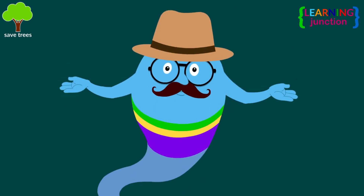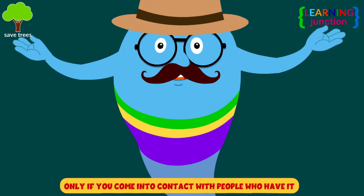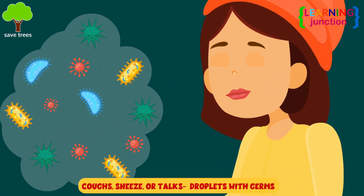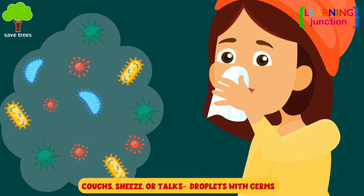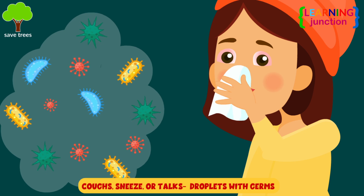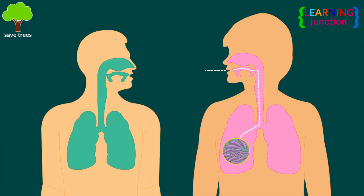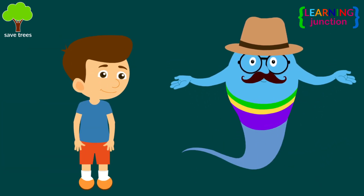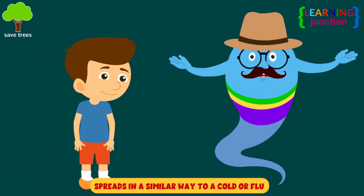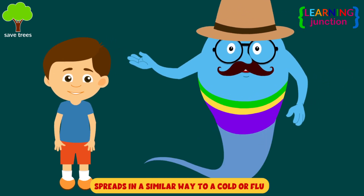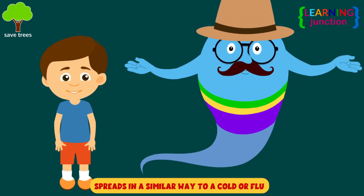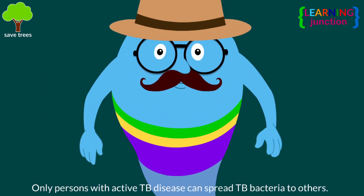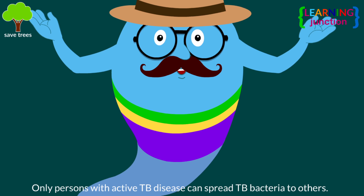You can get TB only if you come into contact with people who have it. When someone who has TB coughs, sneezes, or talks, they release tiny droplets that contain the germs. If you breathe in these germs, you can get it. Tuberculosis spreads in a similar way to a cold or flu, but it is not as infectious. You would have to spend several hours in close contact with an infected person to catch the infection yourself.